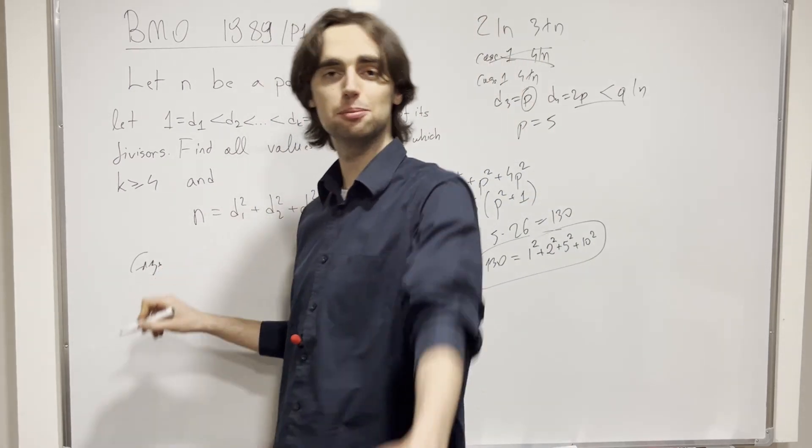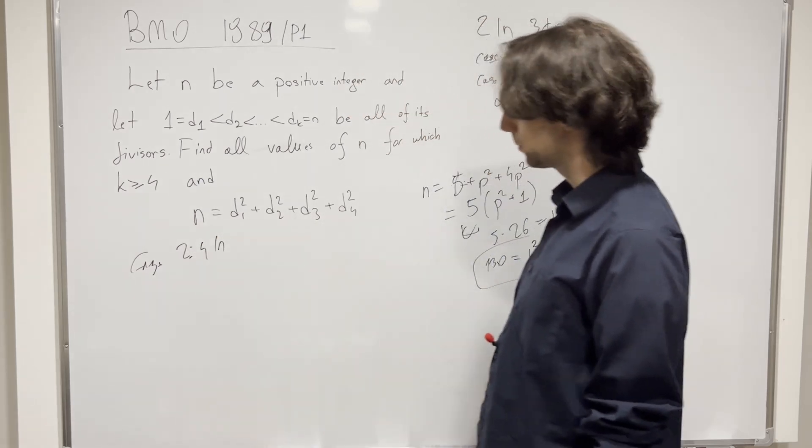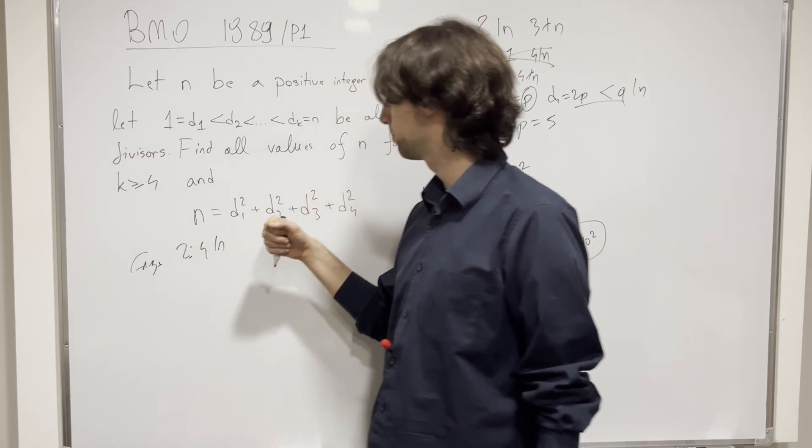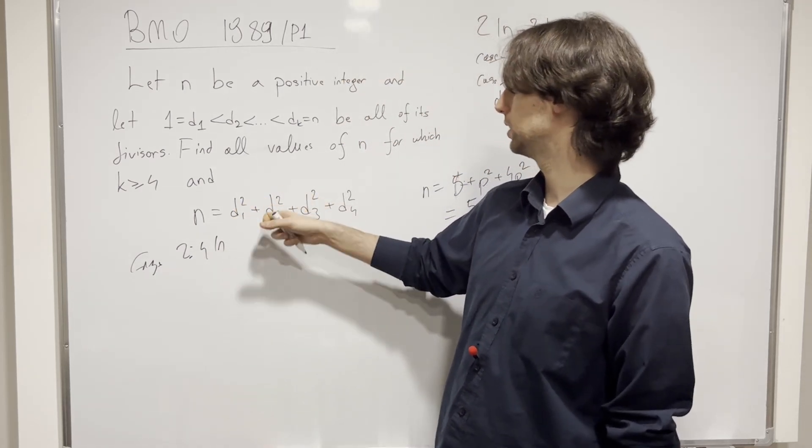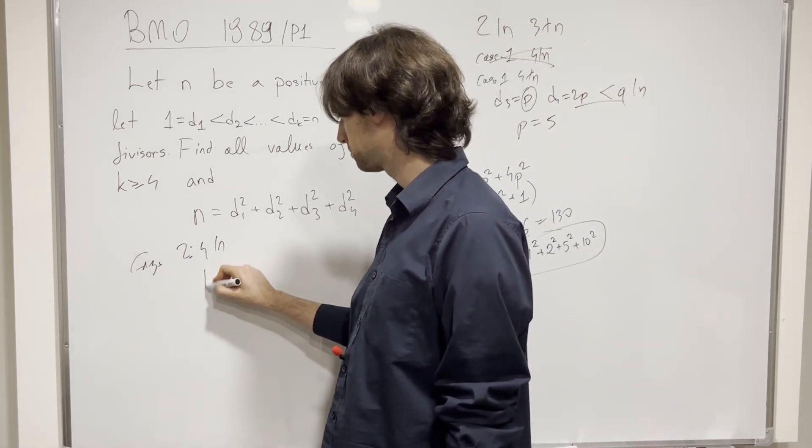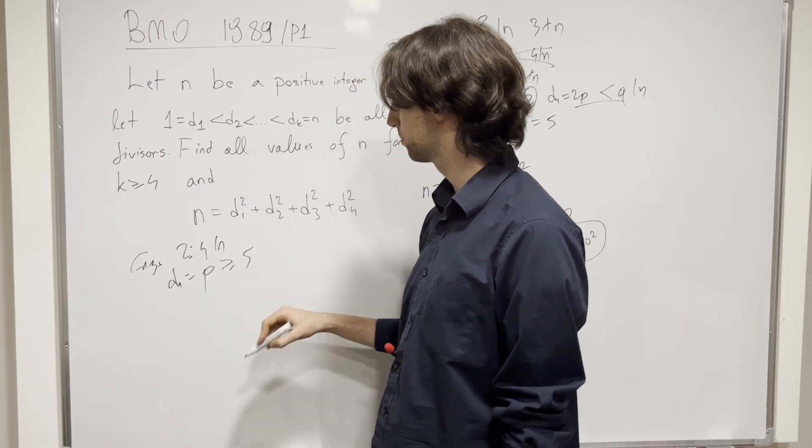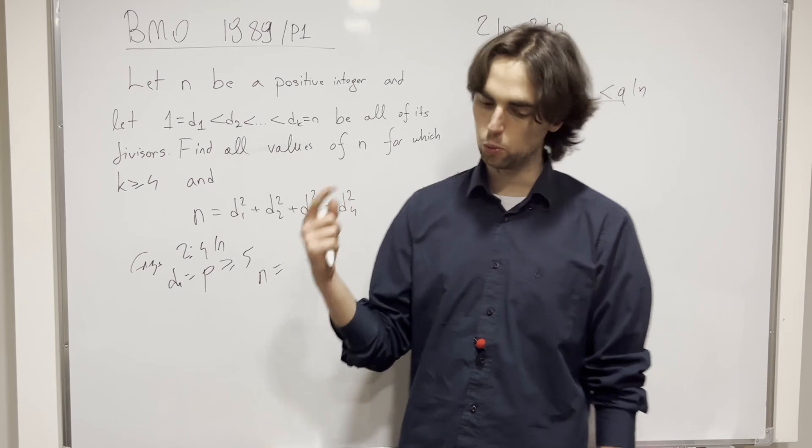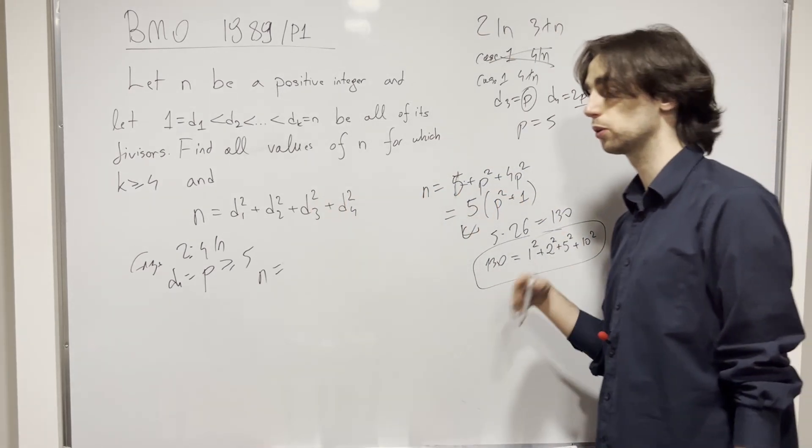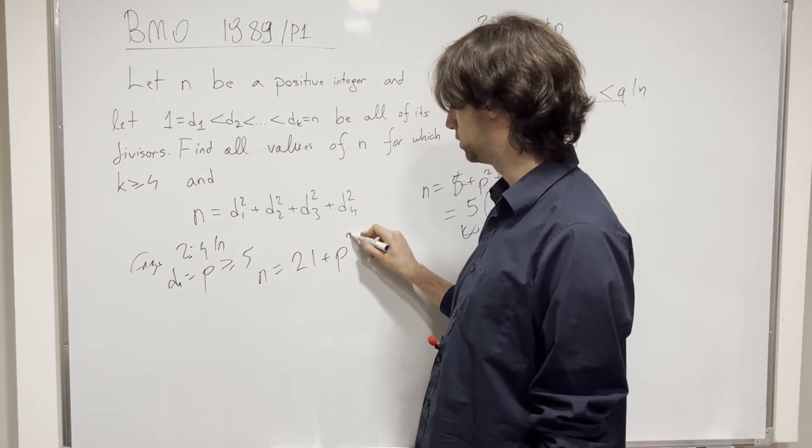Now, what about the other case? I invite you, pause for 5 minutes, deal with the other case. Case 2, 4 divides n. What do we have then? D4 needs to be equal to a prime number, otherwise we will have an odd plus an even plus an even plus an even. So we need to have a prime p, and that's going to be d4 is going to be p, greater than or equal to 5, and we're going to have n is equal to 1 plus 2 squared plus 4 squared plus p squared, which is equal to, so now we're going to have n is 21 plus p squared.